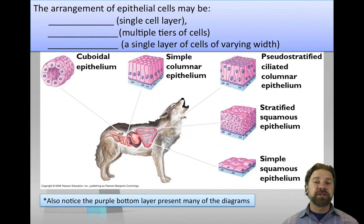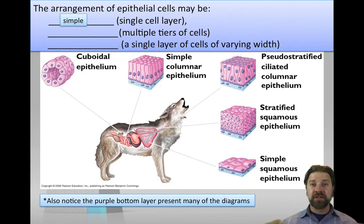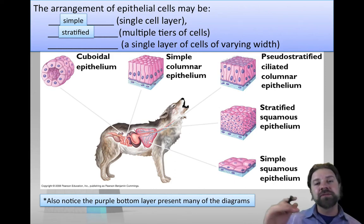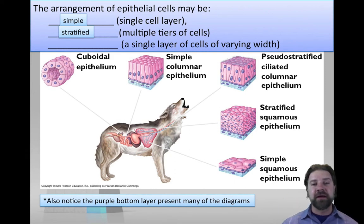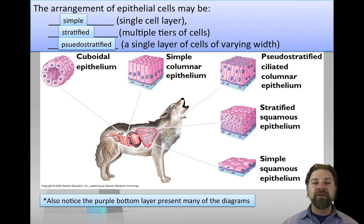Additional terms describe how many layers are present. Simple means one single layer. Stratified means multiple layers or tiers of cells. Pseudostratified means a single layer of varying width that looks like multiple layers but isn't — all cells still reach from top to bottom.